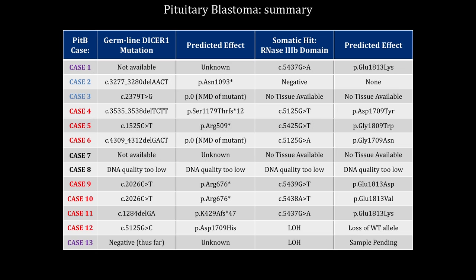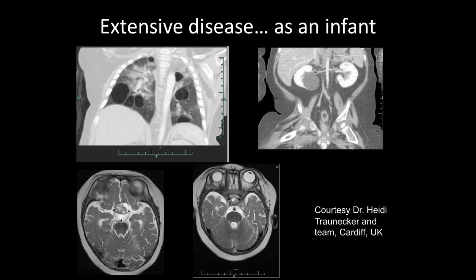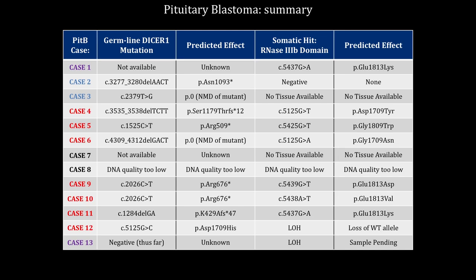When we first presented this in Florence we had 3 mutations; now 4 years later every case we've been able to study has a DISA mutation. It seems that all children with pituitary blastoma have a DISA mutation either in the germline or somatically. Two other cases — one published from Thailand, another from the NIH group — both appear to have DISA mutations. Cases with two mutations shown in red, germline only in blue, and insufficient DNA in black.